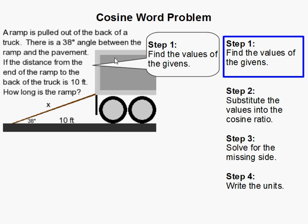So in this problem, I'll just go ahead and read it to you. The ramp is pulled out of the back of a truck. There's a 38 degree angle between the ramp and the pavement. If the distance from the end of the ramp to the back of the truck is 10 feet, how long is the ramp?